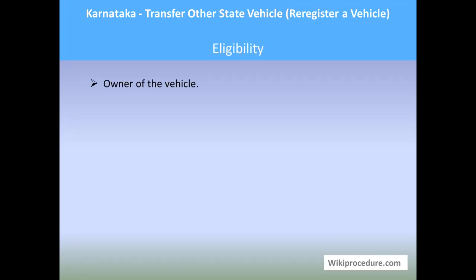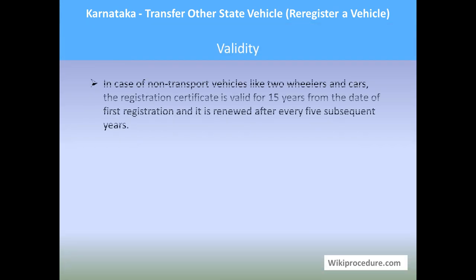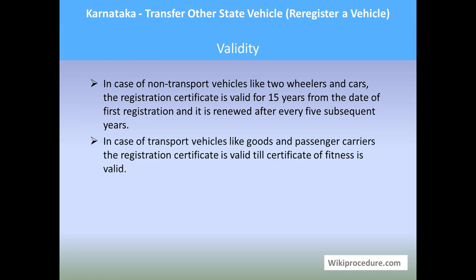Eligibility: any owner of a vehicle is eligible for this procedure. Validity: in the case of non-transport vehicles like two-wheelers and cars, the registration certificate is valid for 15 years from the date of first registration, and is renewed every five years after that. In the case of transport vehicles like goods and passenger carriers, the registration certificate is valid until the certificate of fitness — that is, FC — remains valid.